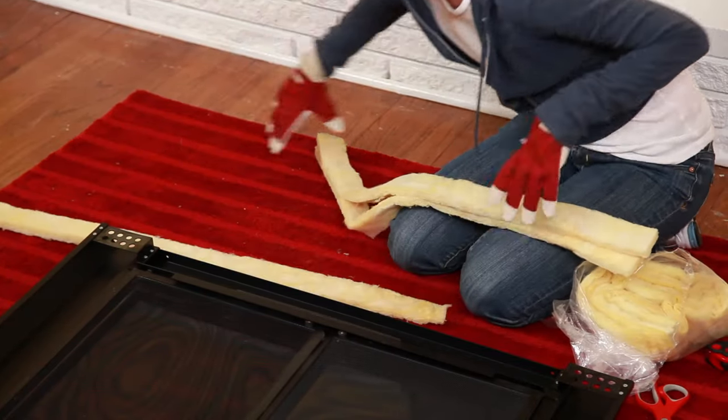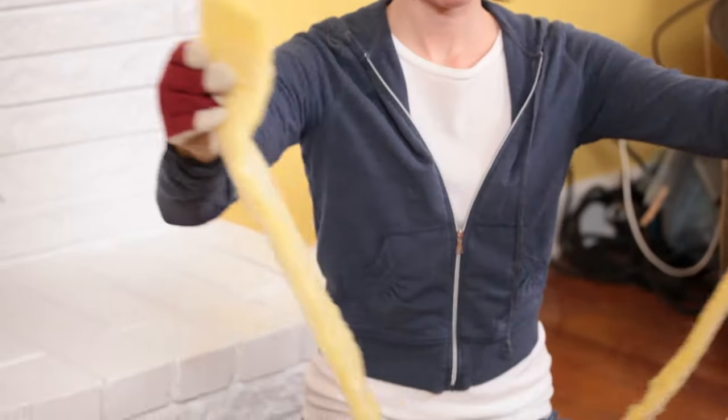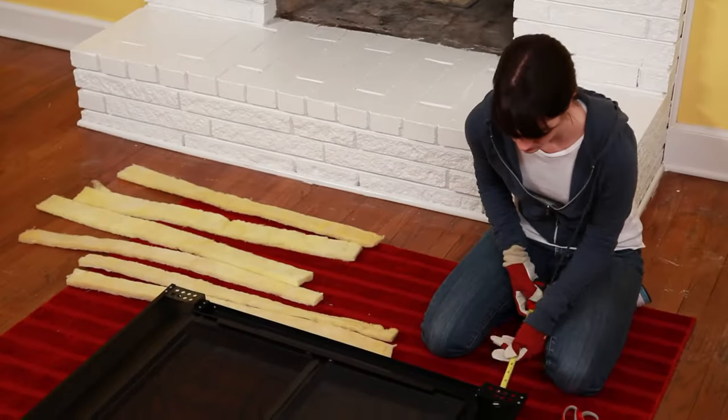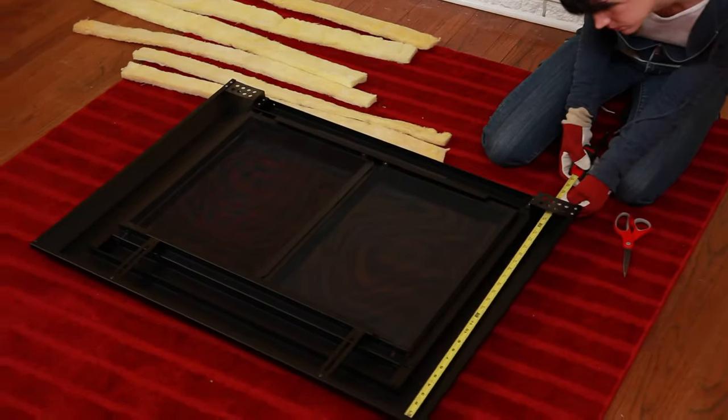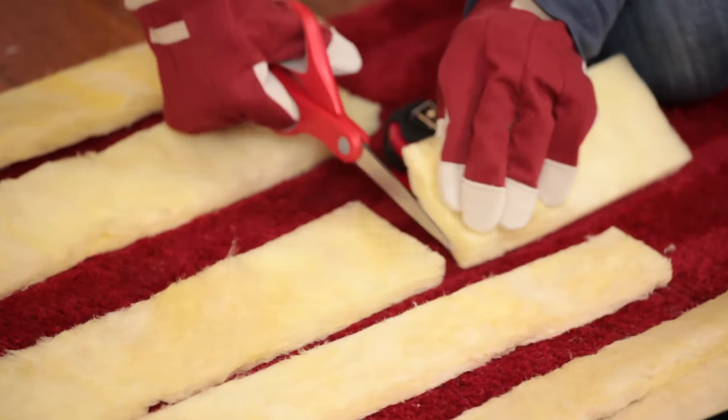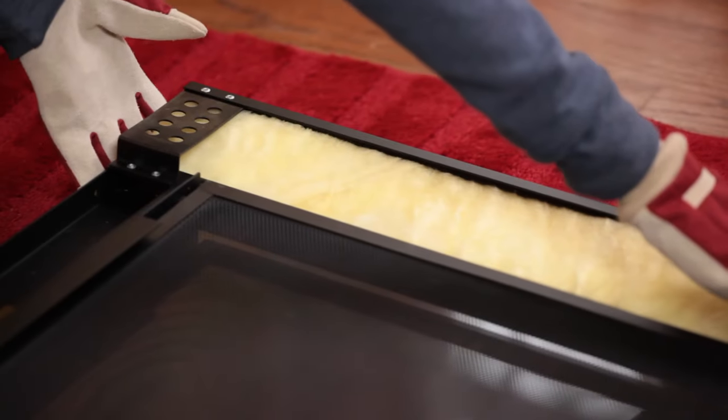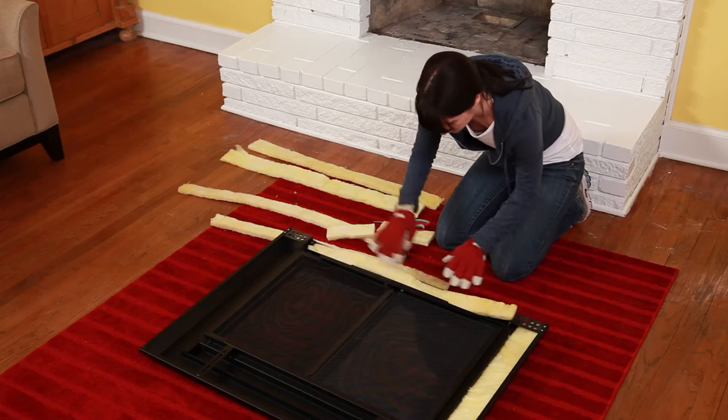Separate the three inch and two inch fiberglass pieces into three strips each by peeling them from one end. On the back of your glass doors are four channels. Measure the dimensions of each channel and use your scissors to cut the insulation to length. Place an insulation strip into each channel. It is not necessary for the insulation to fill the channels to their full depth.